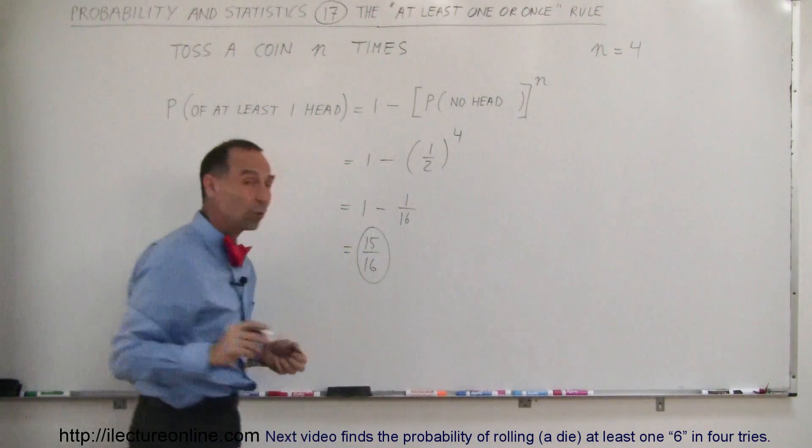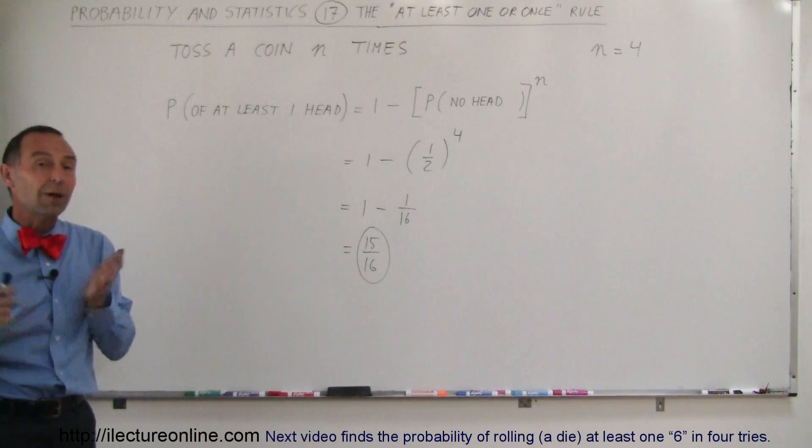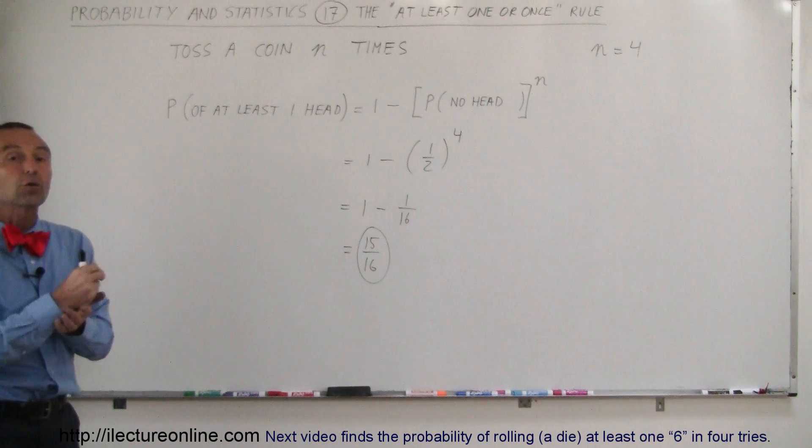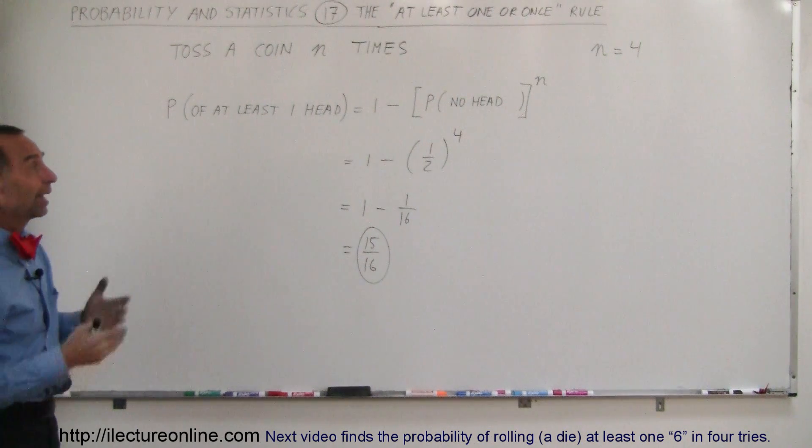So if you're going to toss a coin four times, there's 15 out of 16 probability that at least one of those will be a head. Could be more than one, but at least one of them, and that's how we do it.